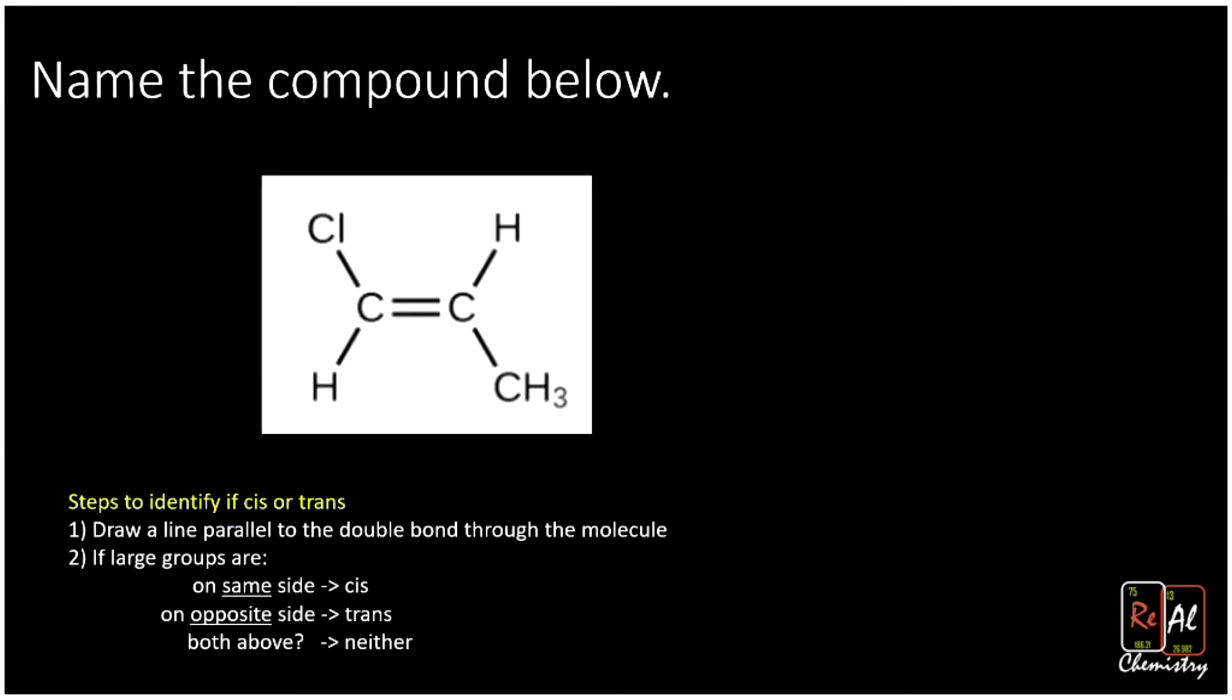Last problem. We're going to actually identify this as cis or trans and then we're going to name it. First of all, is it cis or trans? Well, we draw a line through the C=C double bond and we see the chlorine's above, the CH3 is below. And so we know that's trans. So this is a trans molecule.